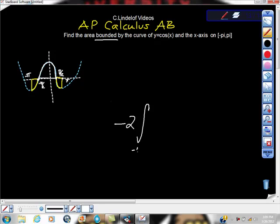And it's from negative pi to negative pi halves. If you don't like that, you can take it from pi halves to pi. Either one, you're going to get the same answer, so you can check that if you want to, of cosine of x.